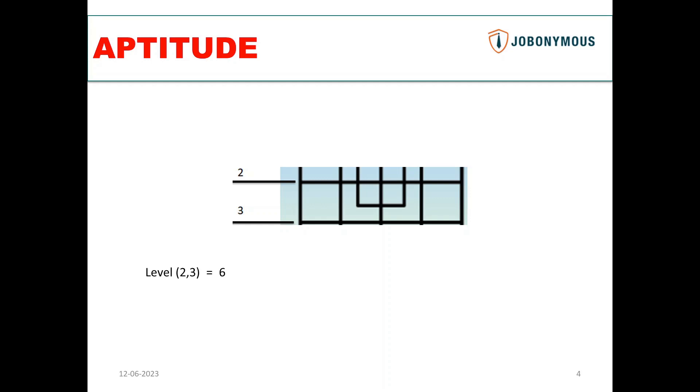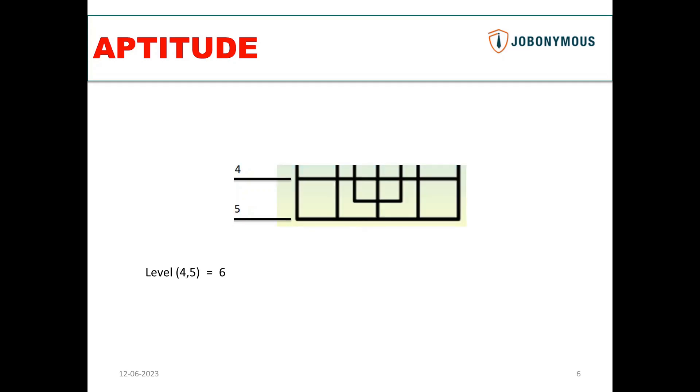Similarly, between two and three: one, two, three, four, five, six. So between level two and three, six squares. Three and four: one, two, three, four, five, six. Similarly level four and five: one, two, three, four, five, six.